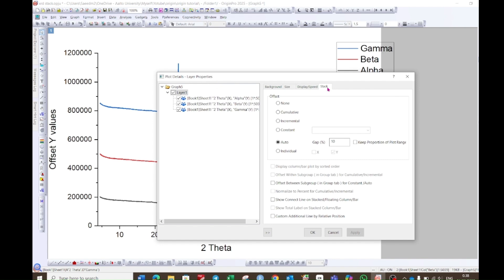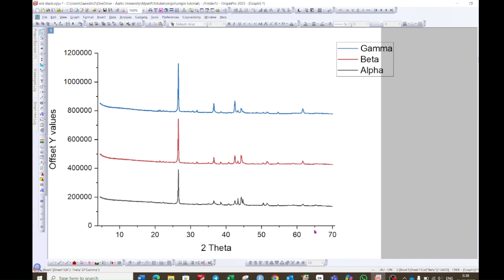Choose the option which says stack. Choose individual, and then make sure this y is selected and then press OK. By doing so, now you can really move the graph up and down.